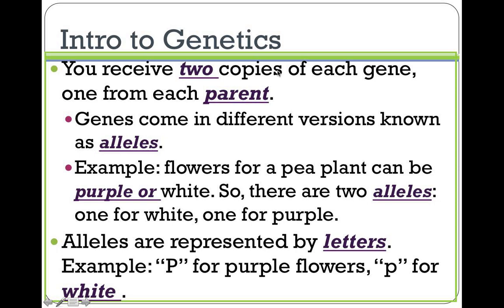So, in genetics, you receive two copies of each gene, one from each parent. You have these two copies of each gene, and they come in different versions that are known as alleles. Here's an example. We're going to be talking a lot about flowers — pea plants especially. The reason for this, as maybe you remember from class on Tuesday, is that Gregor Mendel,